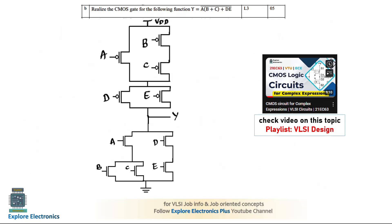In that question I made a mistake in my previous video where the DE transistors in the pull-up network need to be connected in parallel. In my previous video I connected them in series in the pull-up transistor. This is the correct circuit for the expression Y = AB + C + D whole bar, which gives the correct result.